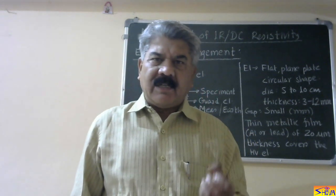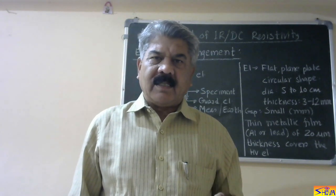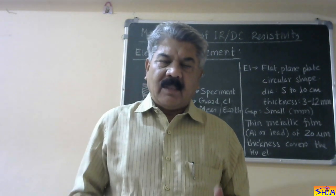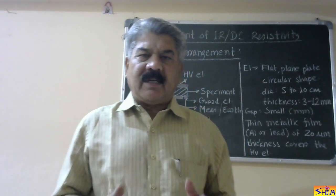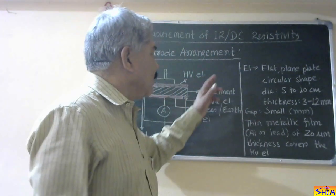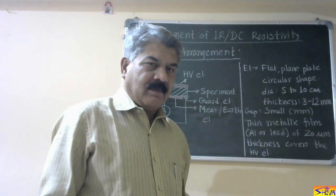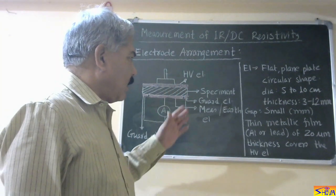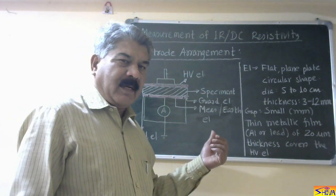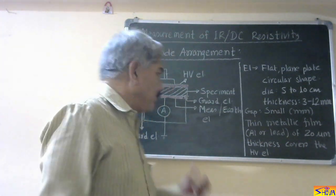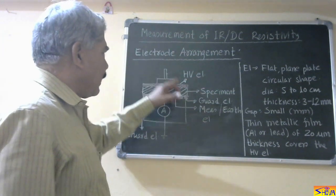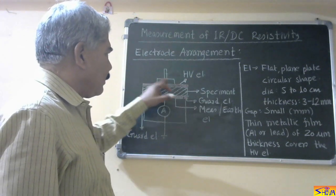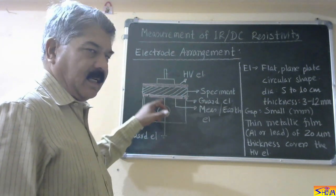We need a sensitive device or very sensitive ammeter to measure this current. Therefore, there are two specific techniques to measure the insulation resistance or DC resistivity. First, I will explain how the specimen is prepared and the electrode arrangement. This is called a three-electrode arrangement.